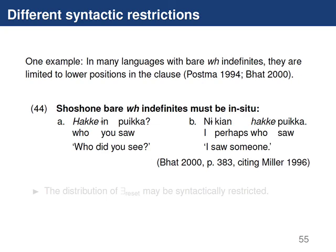The second way languages may vary is by restricting the position of those helping operators. In many WH-movement languages with bare WH indefinites, those indefinites must be in-situ or lower in the clause — moving WHO to the beginning forces a question interpretation, while leaving it in-situ gives a WH-indefinite interpretation. We can propose that the distribution of exists-reset is syntactically restricted, having a ceiling so it must attach at some height but not higher. If a WH phrase moves out of the scope of where exists-reset could apply, it must be repaired by ALTSHIFT, giving a question interpretation.